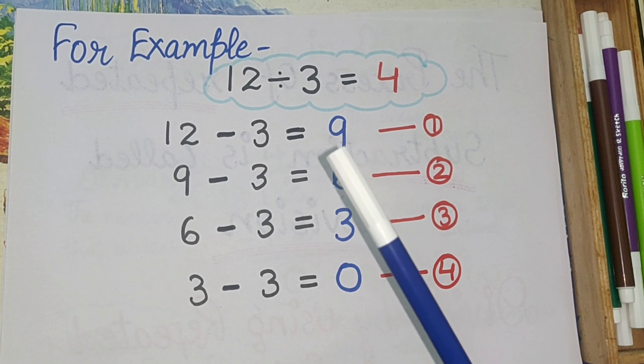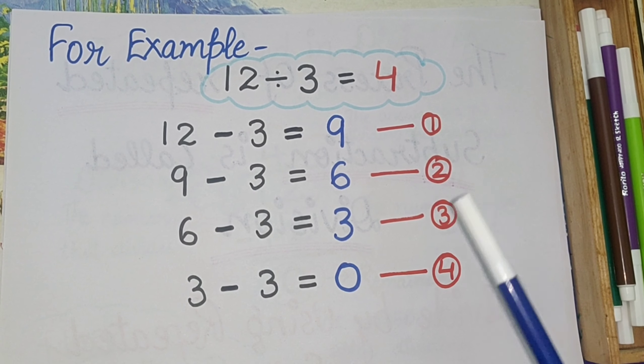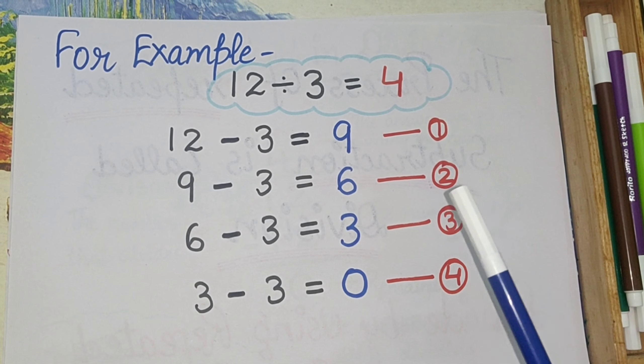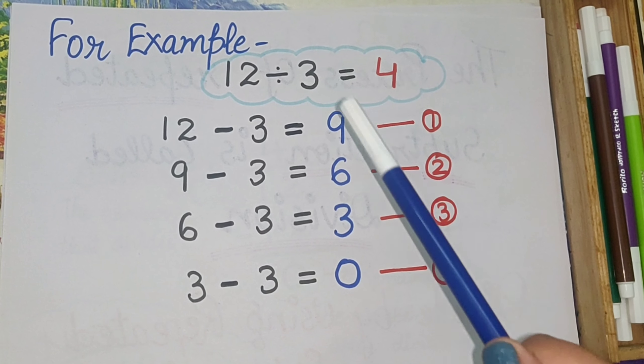By this you can see we have subtracted this 3 four times: first time, second time, third time, and fourth time. And this is our answer.